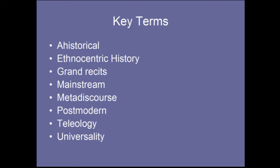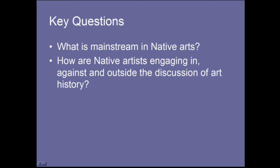That is what this discussion is about: challenging a Eurocentric notion. As you read the McMaster article, ask yourself what is mainstream in Native American or First Nations art, what would be the defining qualities or characteristics, and who are the primary artists who exemplify what we might consider mainstream if such a thing exists. We might also ask how native artists are engaging with, against, and outside the discussion of art history — that is the central focal point of the McMaster article.